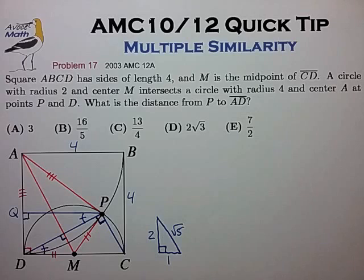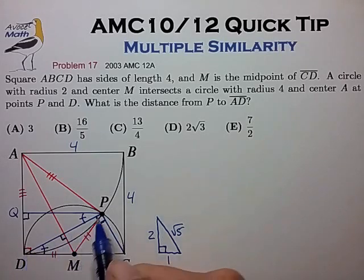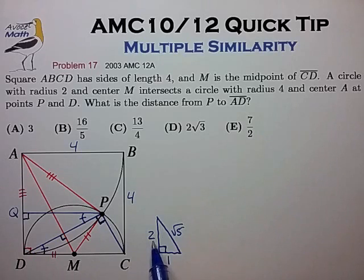And now this triangle is also similar to our reference similar triangle. And from this now, we can pretty quickly calculate the length of QP. And we can do that in two steps.